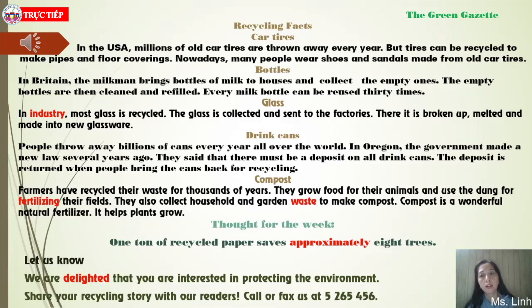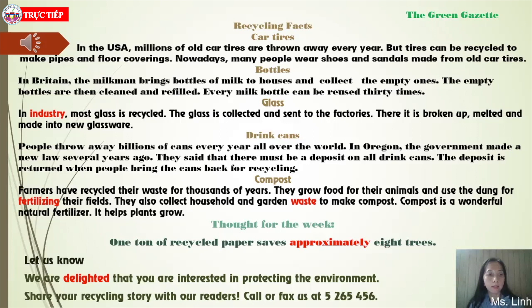Green Gazette. Báo xanh. Recycling Facts — Việc tái chế. Lốp xe ô tô: ở Mỹ, mỗi năm hàng triệu lốp xe ô tô cũ bị vứt bỏ. Tuy nhiên, lốp xe có thể được tái chế để làm ống dẫn và tấm lót sàn. Ngày nay, nhiều người mang giày và dép làm từ lốp xe cũ. Chai: ở Anh, người bán sữa giao chai sữa tận nhà và thu gom những chai không. Sau đó, những chai không này được làm sạch và đổ đầy lại. Mỗi chai sữa có thể được tái sử dụng 30 lần. Thủy tinh: trong công nghiệp, phần lớn thủy tinh được tái chế — thu gom, đưa đến nhà máy, đập vụn, nấu chảy và làm thành đồ thủy tinh mới.